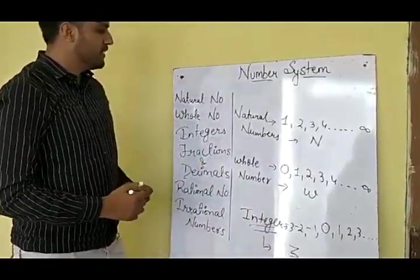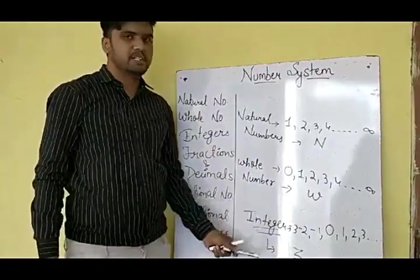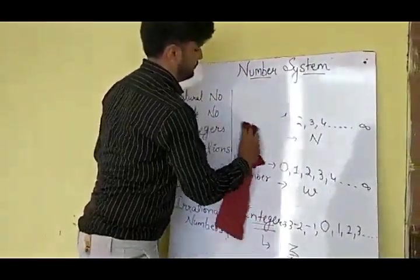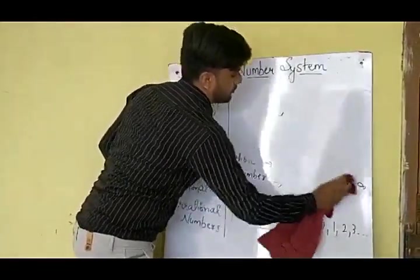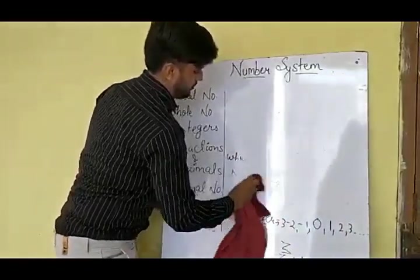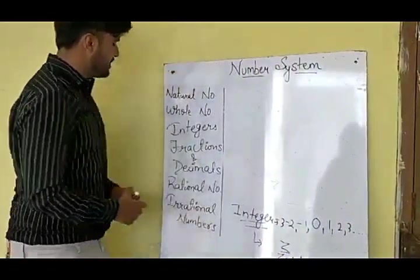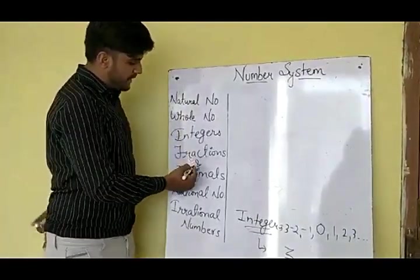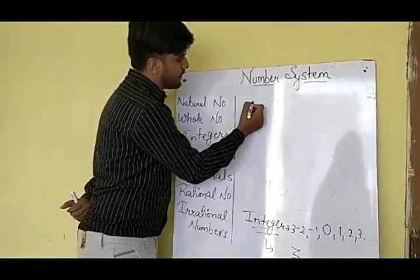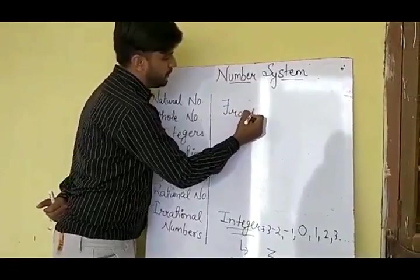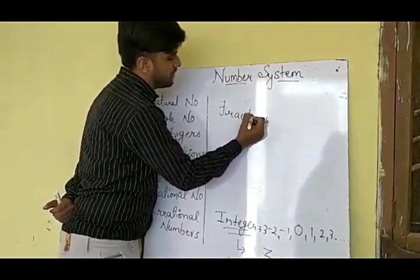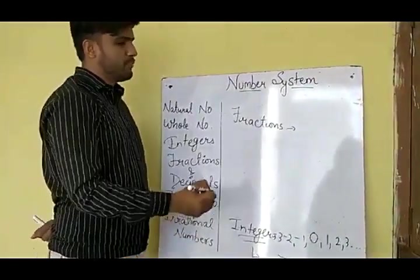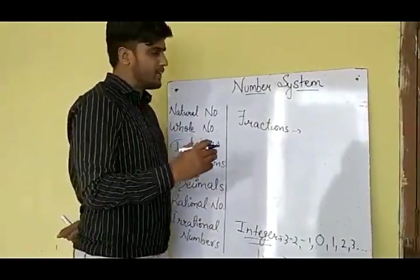So now you must have understood natural numbers, whole numbers, and integers. Now there are fractions and decimals. What are fractions and decimals, and what was the need for them? Fraction is a part of a whole.